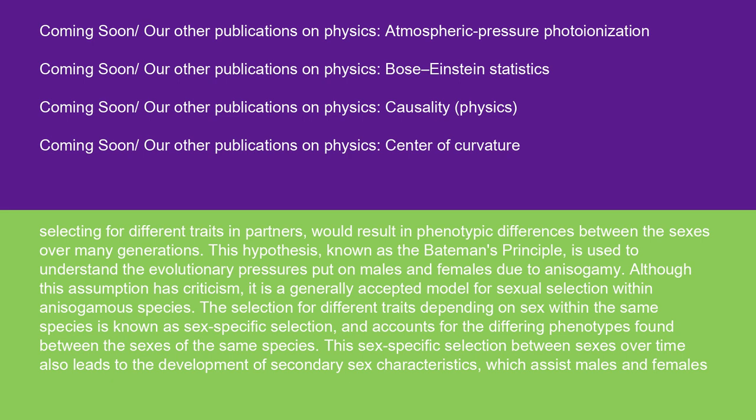This process is also true for females selecting males, and assuming that males and females are selecting for different traits in partners would result in phenotypic differences between the sexes over many generations. This hypothesis, known as Bateman's Principle, is used to understand the evolutionary pressures put on males and females due to anisogamy. Although this assumption has criticism, it is a generally accepted model for sexual selection within anisogamous species. The selection for different traits depending on sex within the same species is known as sex-specific selection and accounts for the differing phenotypes found between the sexes.